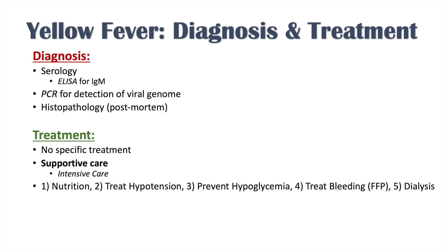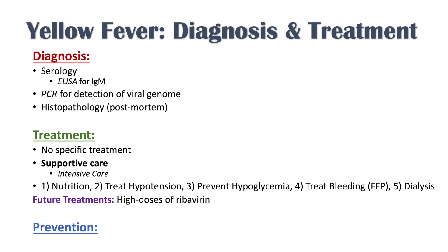Supportive care focuses on nutrition, treating hypotension from shock, preventing hypoglycemia, treating bleeding using FFP, and dialysis for individuals with renal failure. There is some research into using high doses of ribavirin to treat yellow fever. The best approach is prevention — getting a live attenuated vaccine, the yellow fever 17D vaccine. To summarize: diagnosis uses ELISA for IgM or PCR for the viral genome; treatment is supportive care; and prevention is the yellow fever 17D live attenuated vaccine.